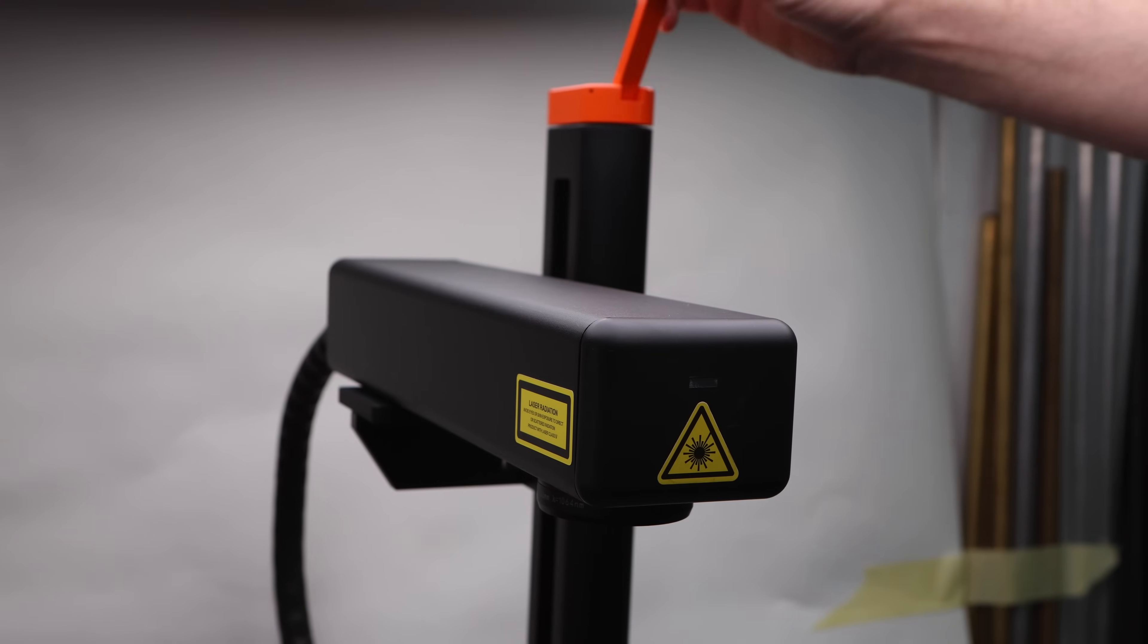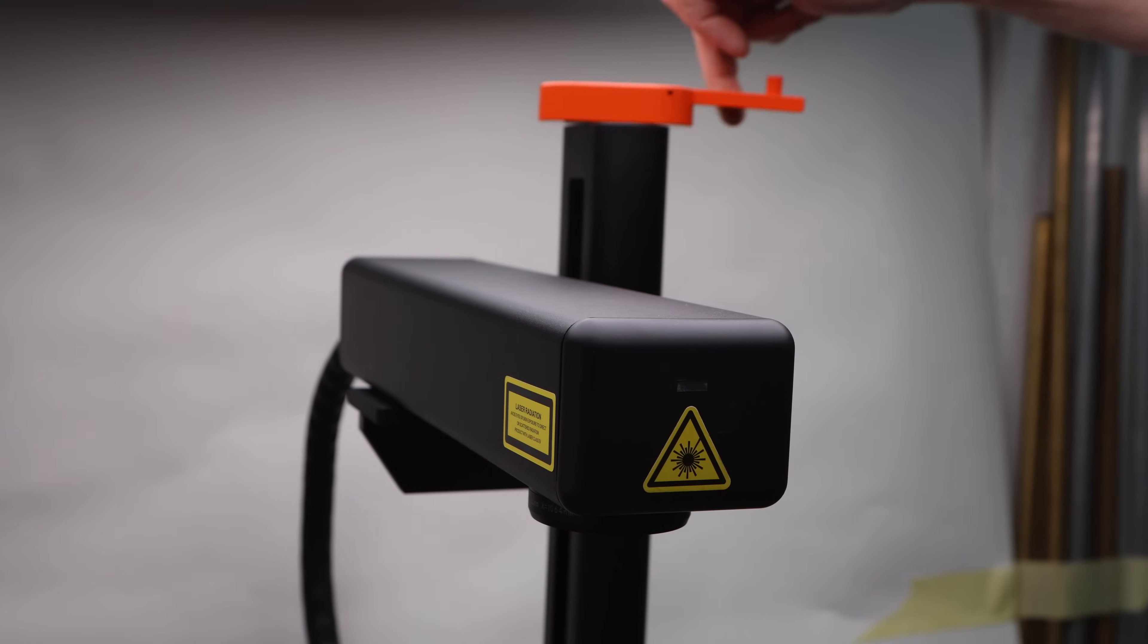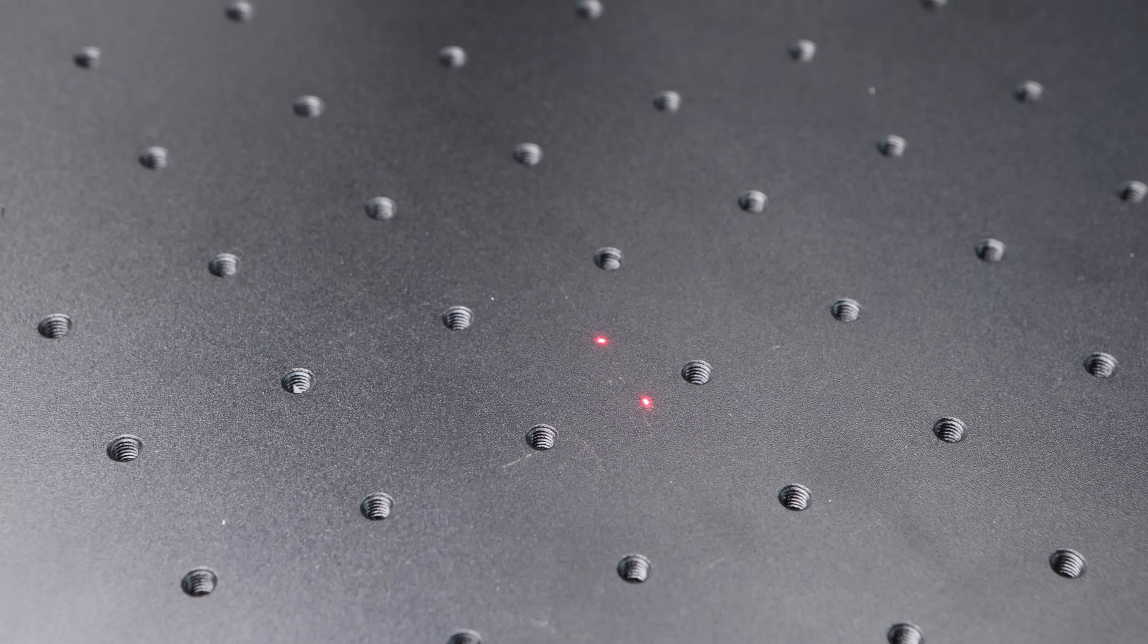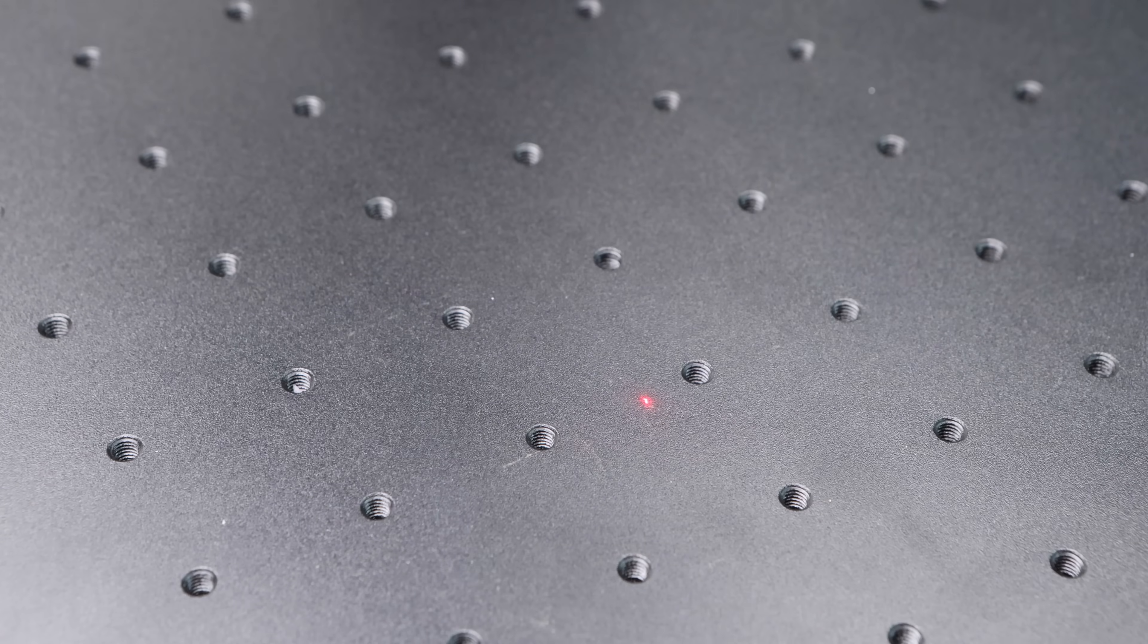To focus the laser we have a handle available on the top of the column there that moves the head up and down. Two spots are projected from a low powered secondary diode laser and as the head moves up and down you'll see these spots moving and when they converge into one then the laser is in focus.